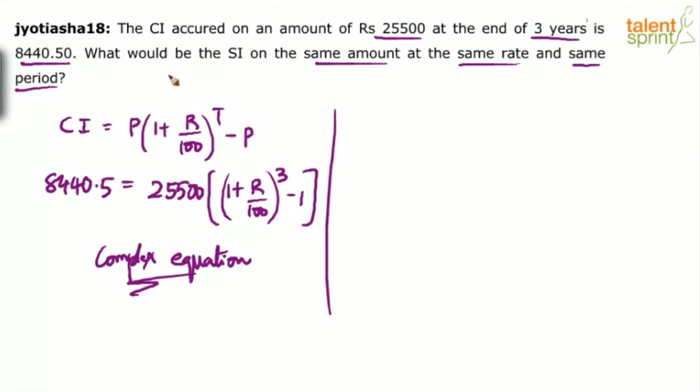By any chance, if you find that three or four options are less than that, simply kill those options. The left out option will be the answer. But in case more than one option is greater, then what do you do? Then simply try to find out how much is this total interest.